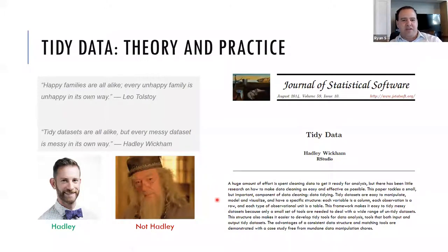So this down here is the abstract of the white paper. And I thought I would just read it because it summarizes everything pretty well. It says, A huge amount of effort is spent cleaning data to get it ready for analysis. But there has been little research on how to make data cleaning as easy and effective as possible. This paper tackles a small but important component of data cleaning, data tidying. Tidy data sets are easy to manipulate, model, and visualize and have a specific structure. Each variable is a column. Each observation is a row. And each type of observational unit is a table.